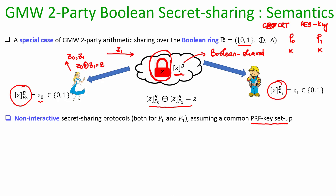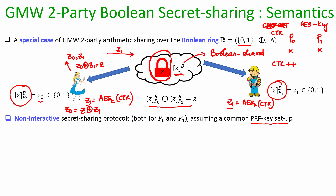Alice would normally pick Z₀ randomly and set Z₁ to be the XOR of Z and Z₀. Instead, both Alice and Bob can set Z₁ to be the AES evaluation on the value of a shared counter, and then Alice sets Z₀ to be the XOR of Z and Z₁. This does not require Z₁ to be communicated to Bob, because both parties will generate the same Z₁ using the same AES key and agreed counter. Once a sharing is generated, they increment the counter.